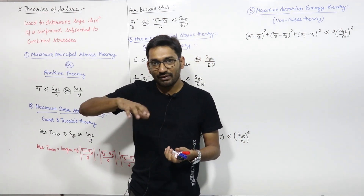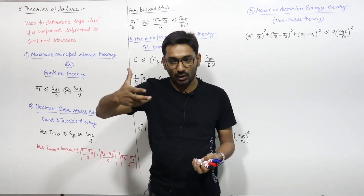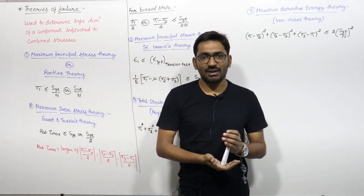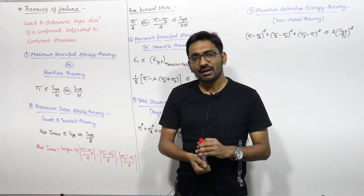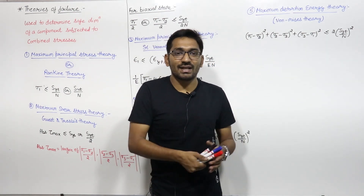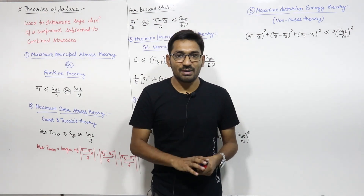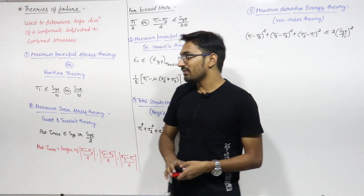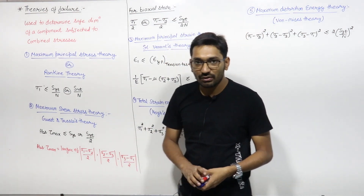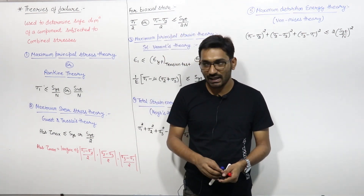If a member is under pure axial, pure bending, or pure twisting, then it is very easy to find out the safe dimension. But if it is combined loading, then we have no formula in the combined loading case to determine the safe dimension. That's why we use the theories of failure. There are 5 theories of failure basically in the strength of materials which we are studying.